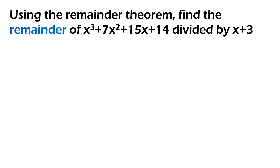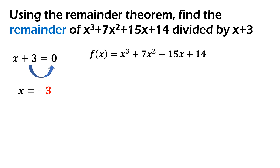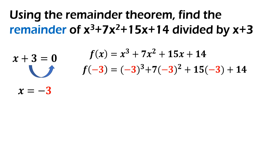Let's have our second example. Let's look for the remainder of the polynomial x cubed plus 7x squared plus 15x plus 14 divided by x plus 3. Kunin yung divisor — x plus 3 — and then you equal that to 0. Transpose yung value ng positive 3. So, yung value ni x will be equal to negative 3. In the polynomial function, substitute yung value ng x — lahat ng x dyan, palitan ng negative 3.